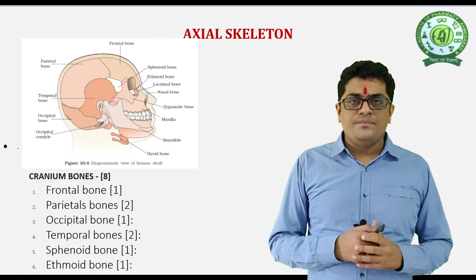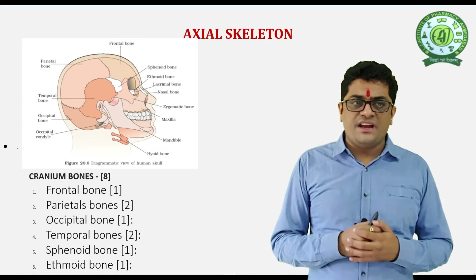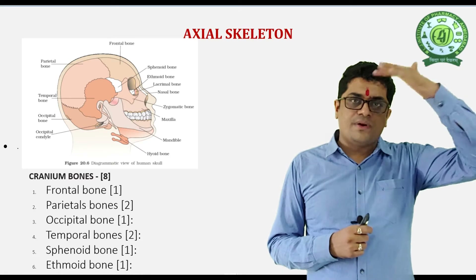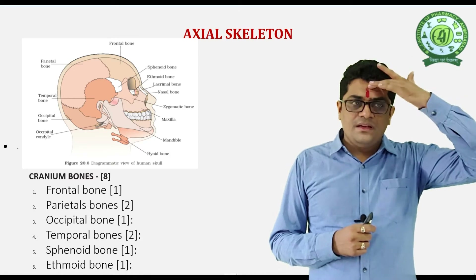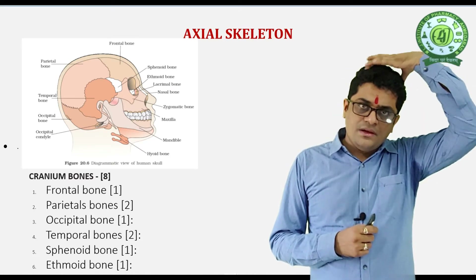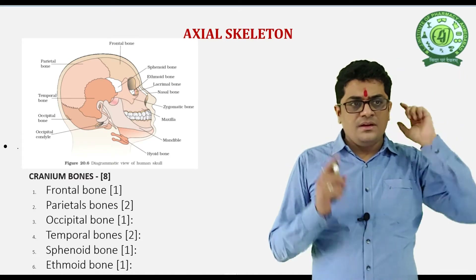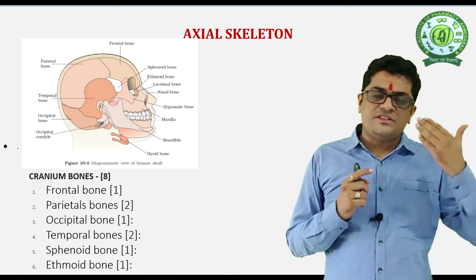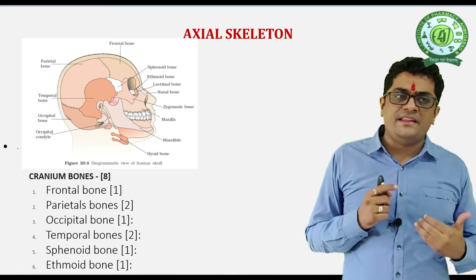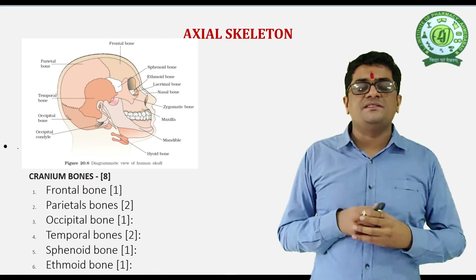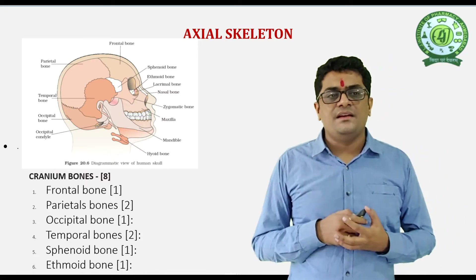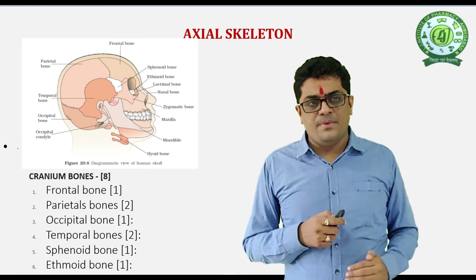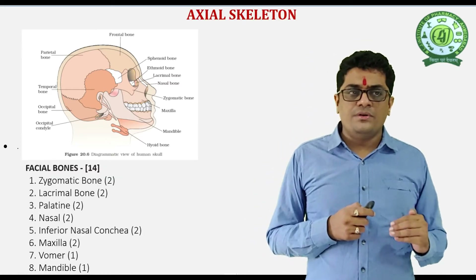In the skull, the cranial bones number 8: 1 frontal, 2 parietal, 1 occipital, 2 temporal, 1 sphenoid which is present behind the eye, and 1 ethmoid which is present in the center of the nasal cavity. These are the 8 cranial bones.